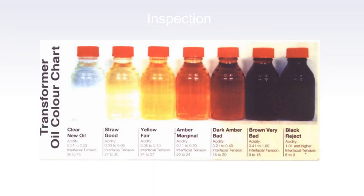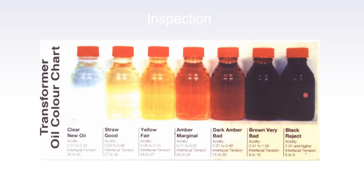Looking at the oil sample and its acidity level, we can determine the condition of the oil. Healthy transformer oil is clear and transparent, with low acidity and high interfacial tension of 30 to 45 — indicating good condition. As oil is used continuously, its color changes from straw yellow to amber to dark amber. Once it reaches dark amber or brownish color, the oil has deteriorated — acidity increases and interfacial tension decreases. Eventually the oil turns black and must be rejected. That is how testing analysis is done.